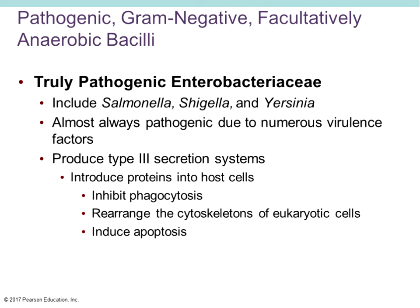Hello everyone, and welcome to the remainder of Chapter 20 for pathogenic gram-negative bacteria. Today we are going to start off talking about the very last group of our enterics. Previously we covered coliform opportunistic enterobacteriaceae like E. coli and Serratia and Citrobacter, then non-coliform — which relates to the ability or inability to ferment lactose — examples being Proteus, Morganella, Providencia, and Edwardsiella. Now we're in that third group of facultative enterobacteriaceae that are truly pathogenic.